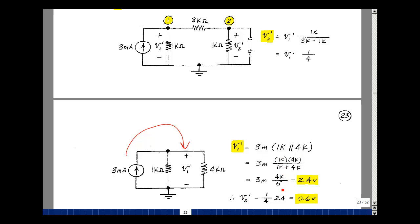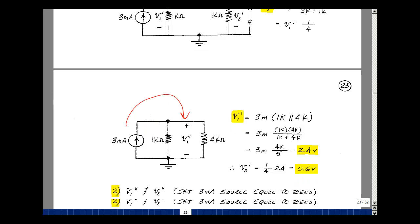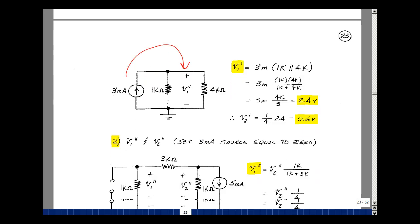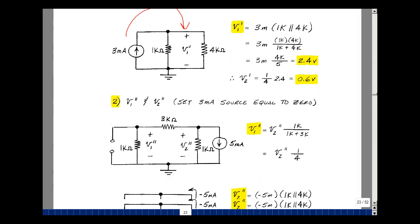3 milliamps times 1k in parallel with 4k would be the product over the sum, and that's going to be 4k squared over 5k. And when the k squared cancel, the k and the milli cancel, and I get 12 divided by 5, which is 2.4. Now that I know this, I can go back and get V2 prime as V1 prime, 2.4 times a quarter, and that's 0.6 volts. Due to the first source acting alone with the 5 milliamp source set equal to 0.